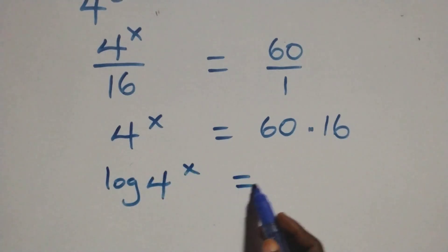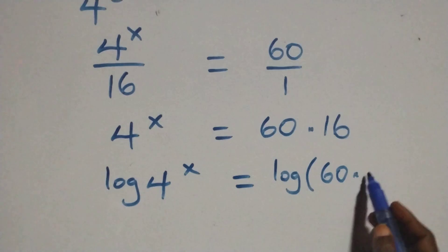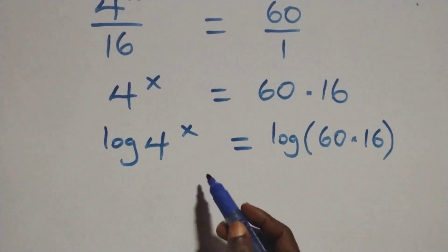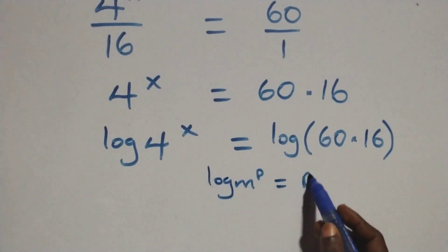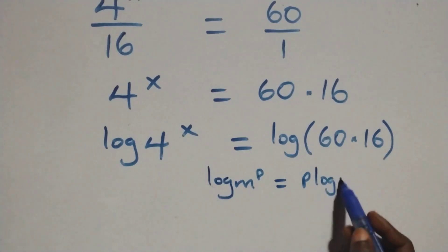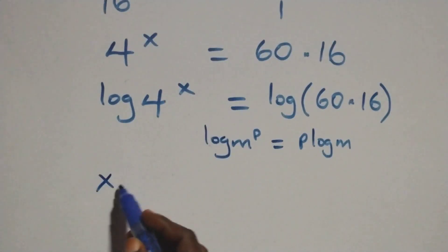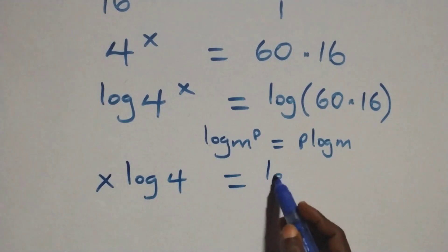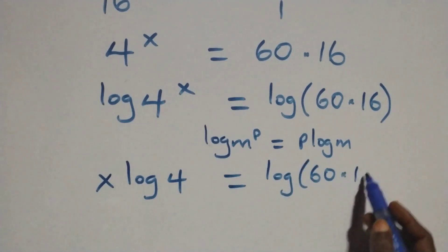In the next step, we take the log on both sides. We have log of four raised to power x equals log of sixty times sixteen. Then we apply the power rule of logarithms: log of n raised to power p is the same as p times log n. So this becomes x log four equals log of sixty times sixteen.